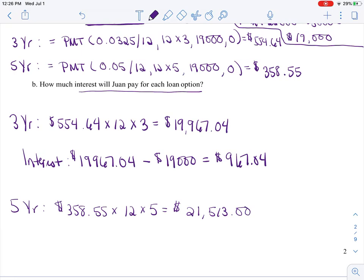Well, to find our interest, interest, it would be how much we gave them minus how much we actually had to borrow. And here we get $1,513.